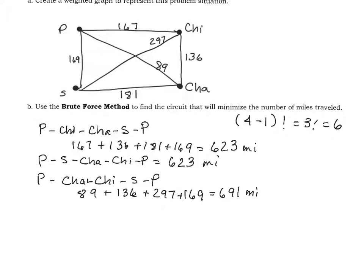So if I go from Peoria, St. Louis, Chicago, Champaign, Peoria, that will also be 691 miles.